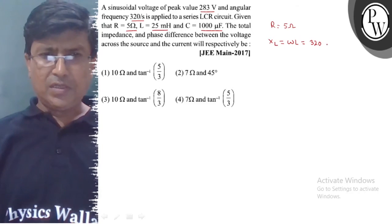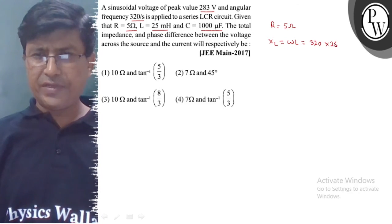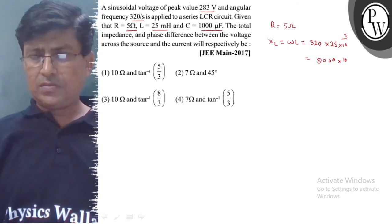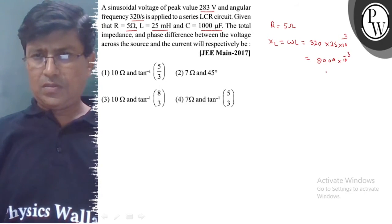320 into 25 millihenry, which is 10 to power minus 3, gives us XL equal to 8 ohm.